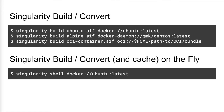On the other hand, let's say your container has already been built and it's in an OCI or Docker format. Singularity can convert these containers to SIF using a single non-privileged command, as you can see here. Singularity can also run and convert images on the fly by building a SIF on the back end and then caching that in your home directory for subsequent uses.